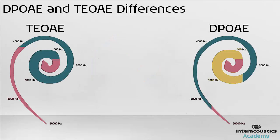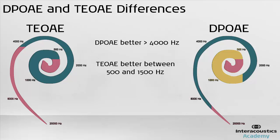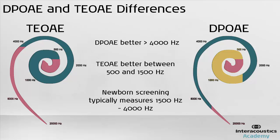Looking at the differences: firstly, DPOAE performs better above 4000Hz and TEOAE better between 500Hz and 1500Hz. However, these differences are less relevant for newborn hearing screening because most programmes screen at frequencies from 1500Hz to 4000Hz.